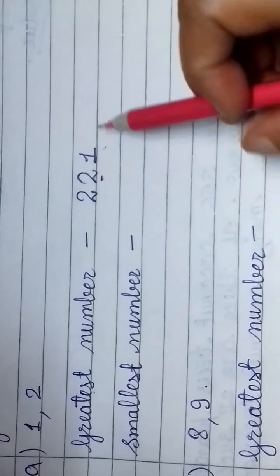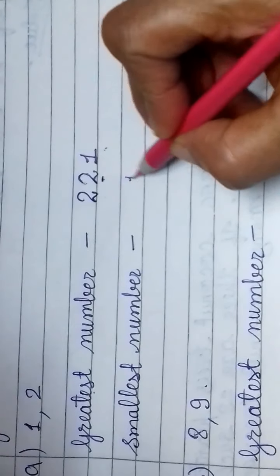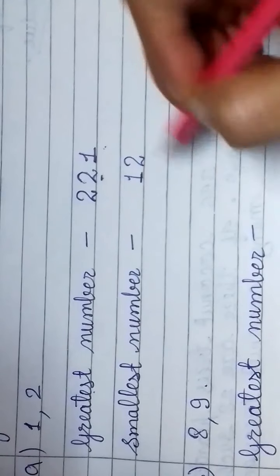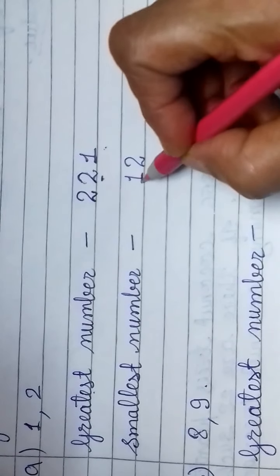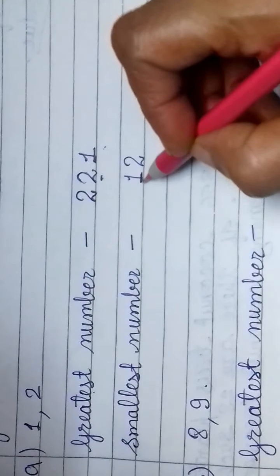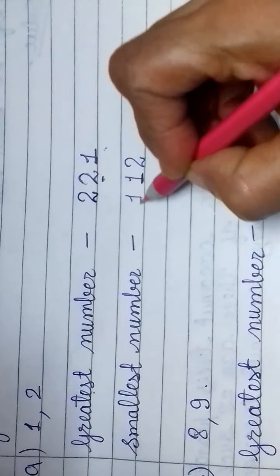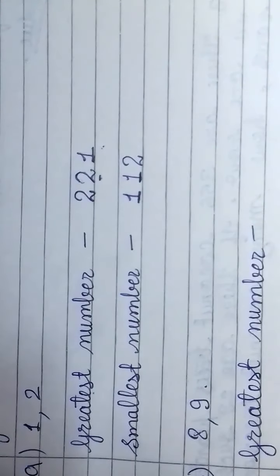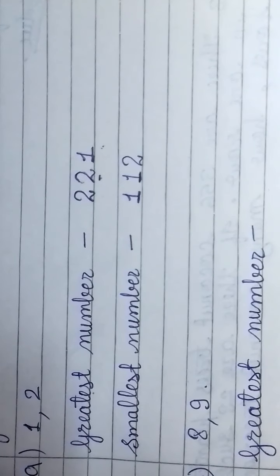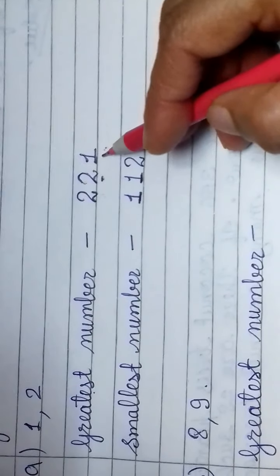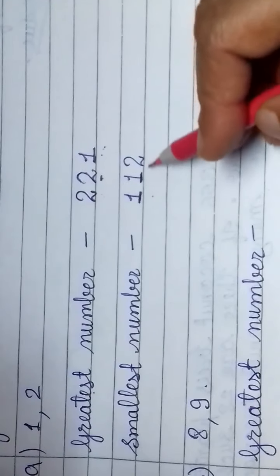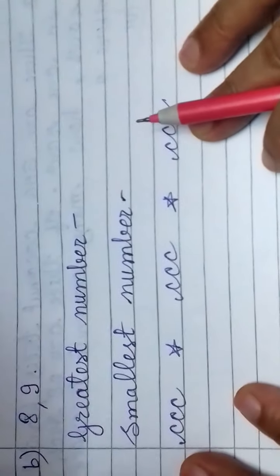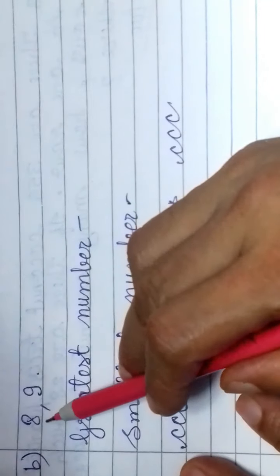Then we make smallest number. Start by 1, is the smallest number, and 2 is the biggest number. Then which number, which digit we repeat? Smallest digit. Correct, smallest digit we repeat in front of the number. This is our 3 digit greatest number. This is 3 digit smallest number.